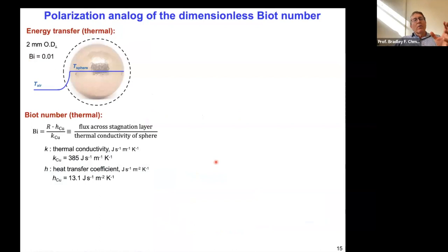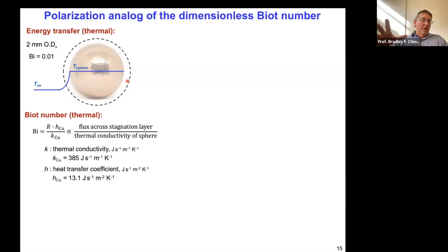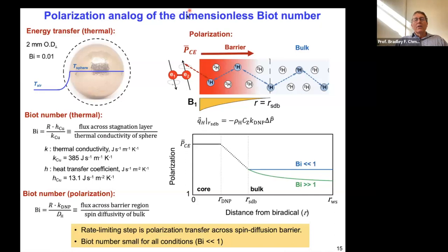Therefore, the rate-limiting step is not spin diffusion away from the source — it's the polarization transfer from those hyperfine-coupled nuclei to the bulk ensemble in the first place. Why do we care? Because if we want to get more polarization to the surface, we need to know where the rate-limiting processes are and concentrate our efforts there. This tells us we're fortunate to have people like Paul Tordo, Olivier Ouari, Anne Lesage, and Lyndon Emsley devising bi-radicals and the right polarization transfer media to optimize this rate of polarization transfer from the paramagnetic centers to the nuclei in the bulk.